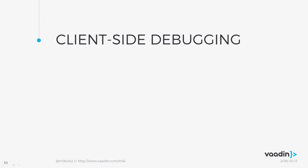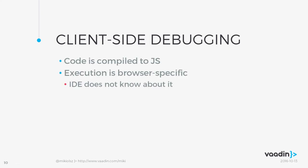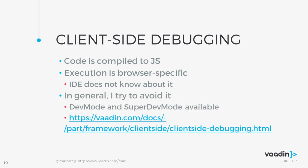That's the server-side debugging. Vaadin also has client-side code — when you're doing custom components or widgets, you have Java code that gets compiled to JavaScript. As such it's running in a browser and the IDE has absolutely no access to it. Under normal circumstances there is no way to debug it except by placing breakpoints in the browser. The JavaScript may or may not have some reference to the Java code you've written — most likely it won't. What I try to do is write code that doesn't break.